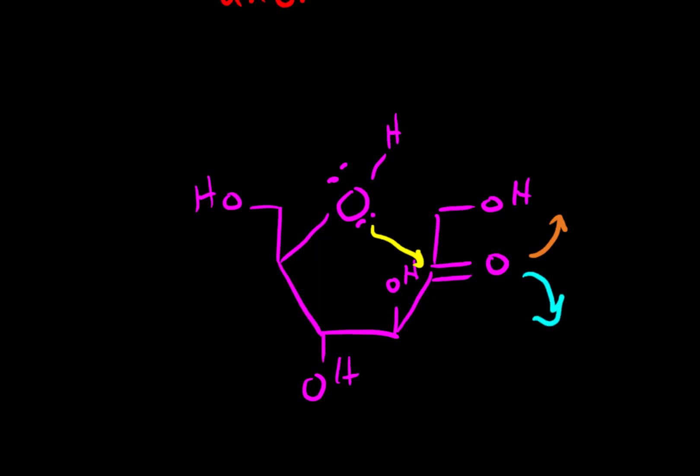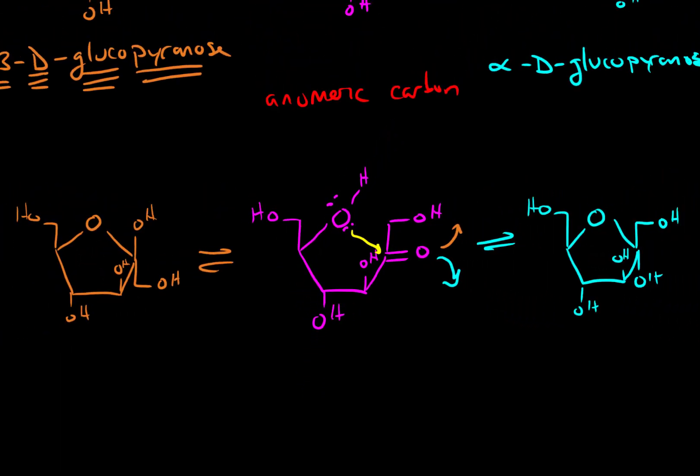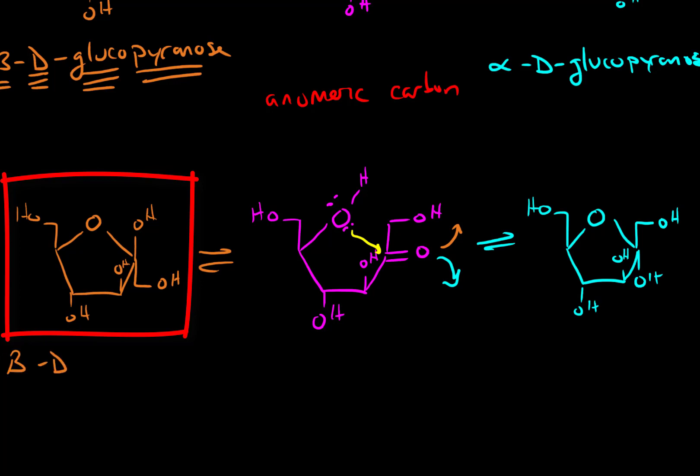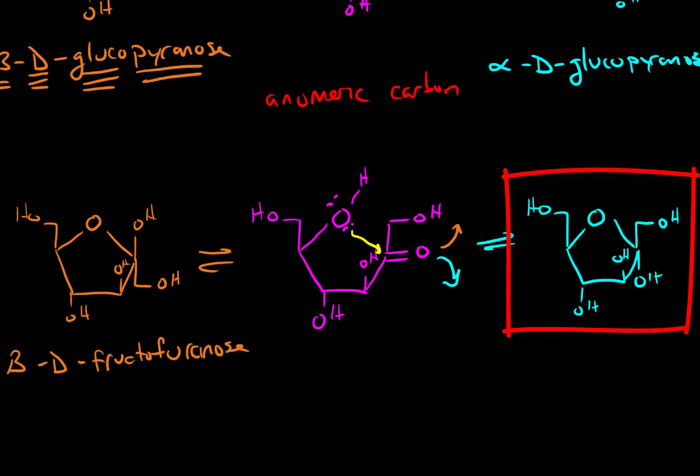So when the ring closes, we can have one of two forms being adopted. When the alcohol group points up, we name this beta D-fructo. And now this is a furan ring, so fructopyranose. When the alcohol group points down, this is alpha D-fructopyranose.